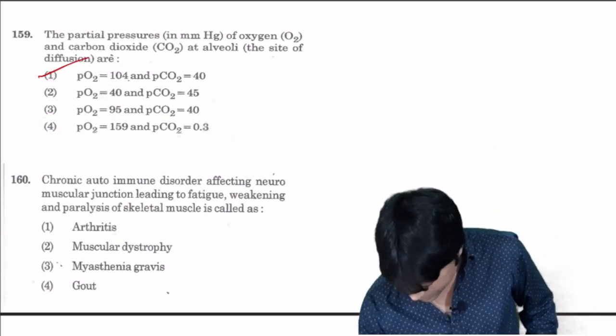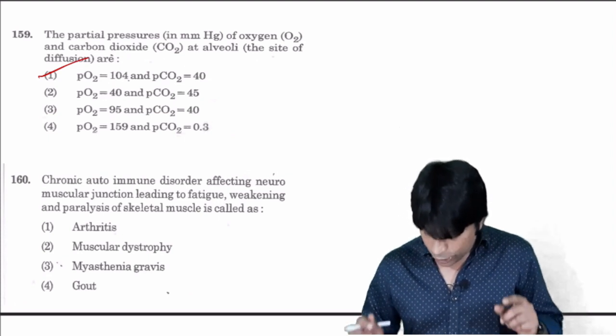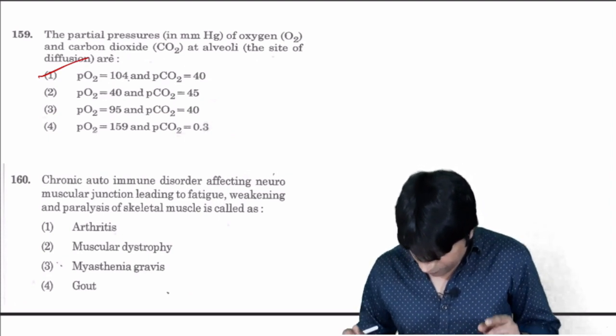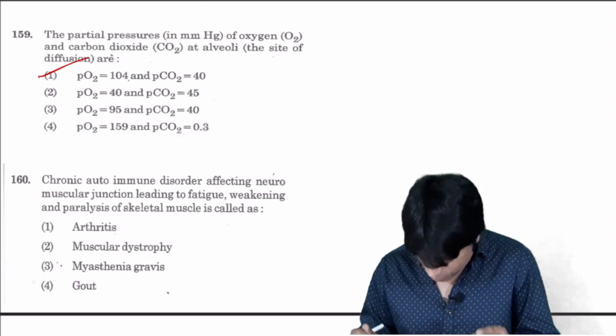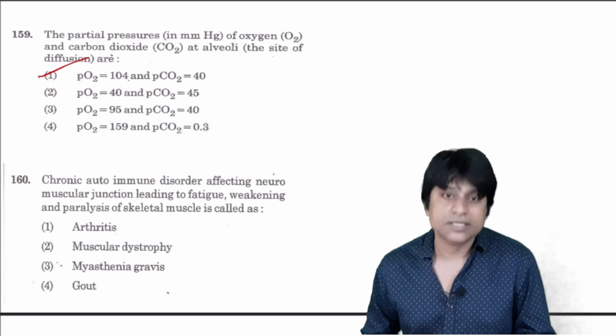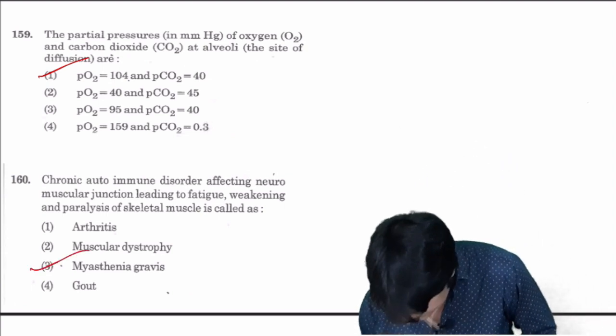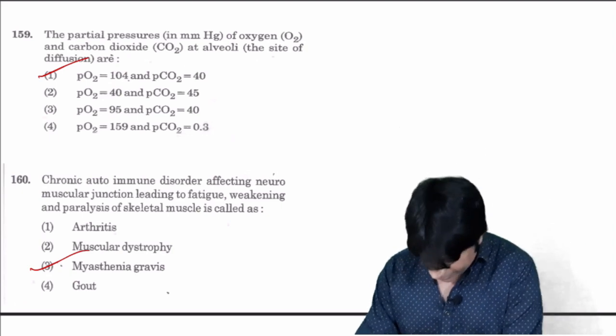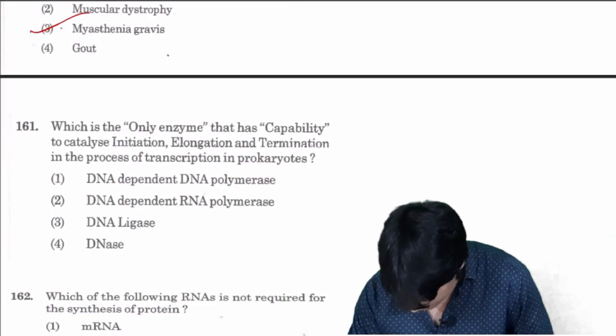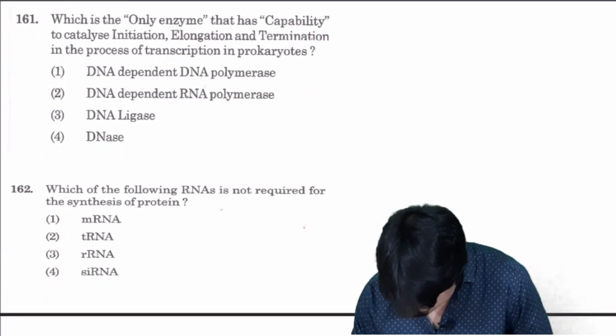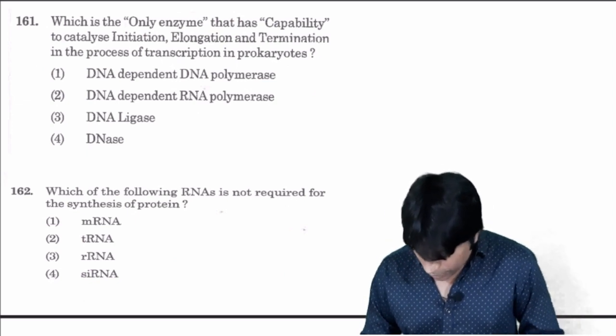Chronic autoimmune disorder affecting neuromuscular junction leading to fatigue, weakness and paralysis of skeletal muscle is called myasthenia gravis. Find out among these the autoimmune disorder - myasthenia gravis.